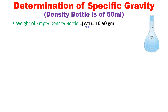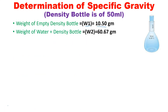Here are some demo readings. W1, the empty bottle weight, is 10.50 grams. Next, we calculate the weight of water plus the density bottle. Fill the bottle with 50 mL of water. Once you insert the stopper, the excess water comes out through the neck — clean it with a tissue paper so the outside is completely dry, then take the weight. W2 is 10.67 grams.